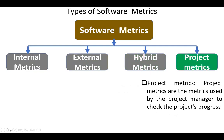Project metrics are the metrics used by the project manager to check the project's progress. The main two metrics used by the project manager are time and cost. The main aim of these metrics is to decrease development costs, time, and risks.